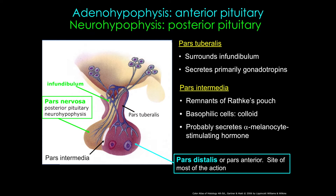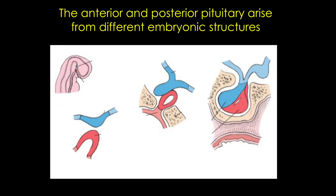Interestingly, the pituitary has two embryonic origins, and this will be reflected in the histology. The anterior pituitary arises as an outgrowth of oral ectoderm — essentially the lining of the roof of the mouth — known as Rathke's pouch, which subsequently detaches and thickens to become the pars distalis. The pars intermedia and tuberalis are also of ectodermal origin. In contrast, the posterior pituitary arises as a downgrowth from the floor of the diencephalon — neuroectoderm — and remains attached to the hypothalamus via the infundibulum.